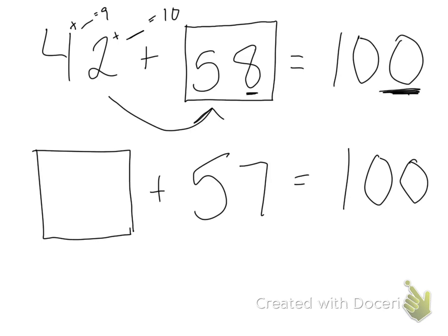So for this next one, we have something plus 57 equals 100. We want to think, what plus 7 equals 10? I know that 7 plus 3 equals 10.